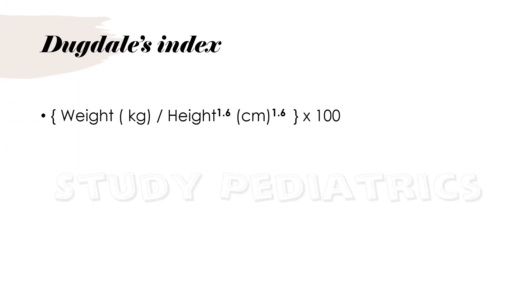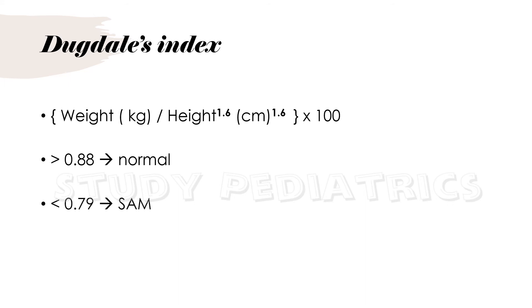Dukedale's index is almost similar to Rao and Singh's index, but with the difference that here the height is raised to the power of 1.6. The formula is weight divided by height raised to the power of 1.6, multiplied by 100. If the value is more than 0.88, it indicates normal, and if the value is less than 0.79, it indicates SAM.